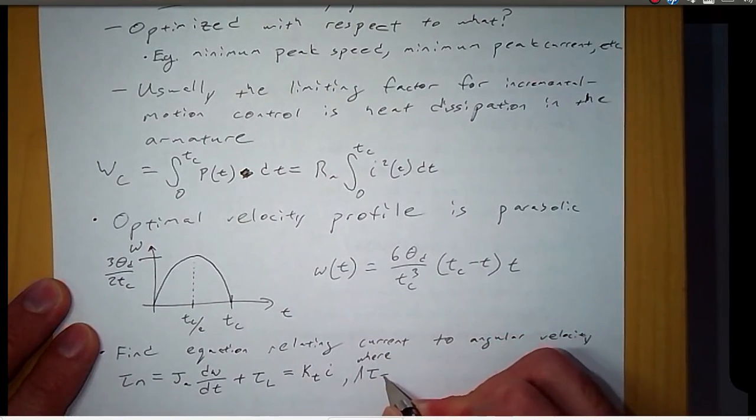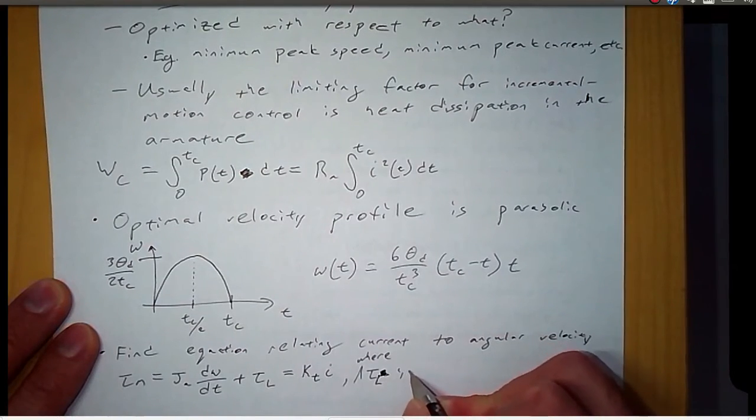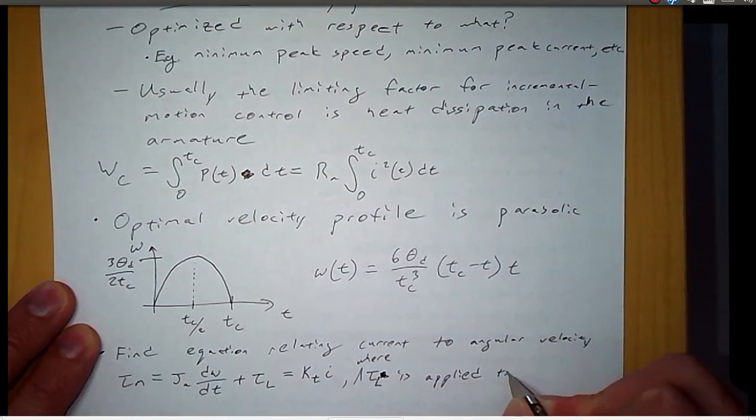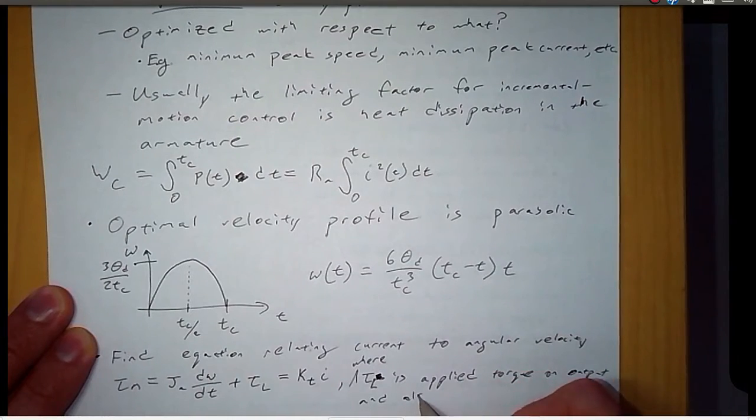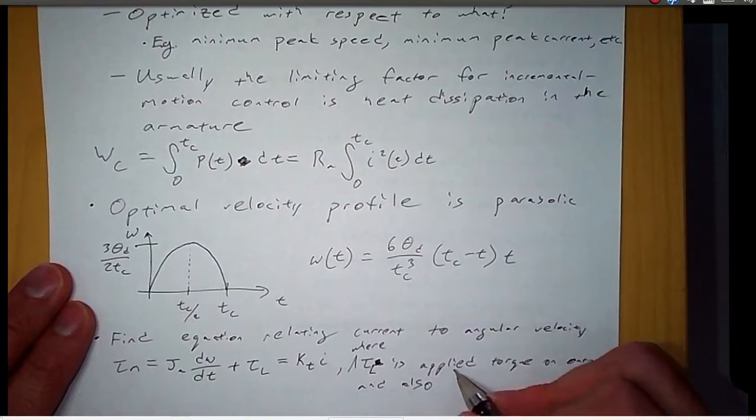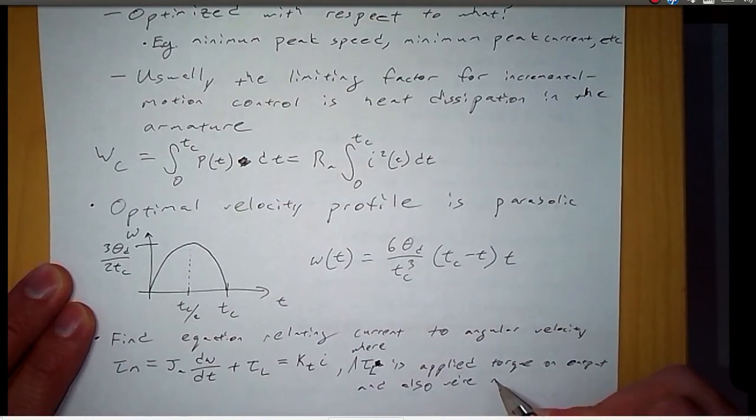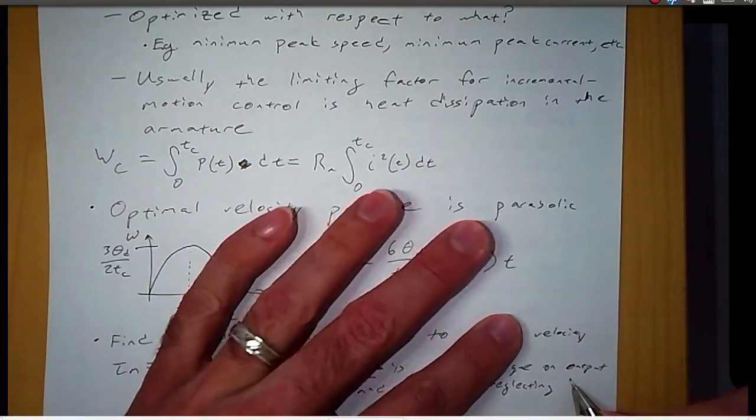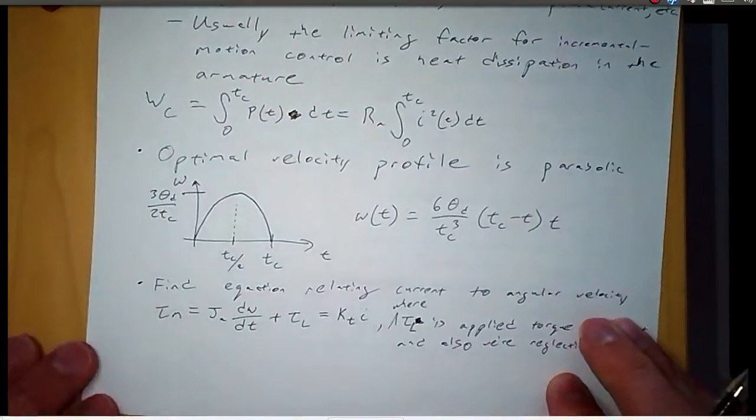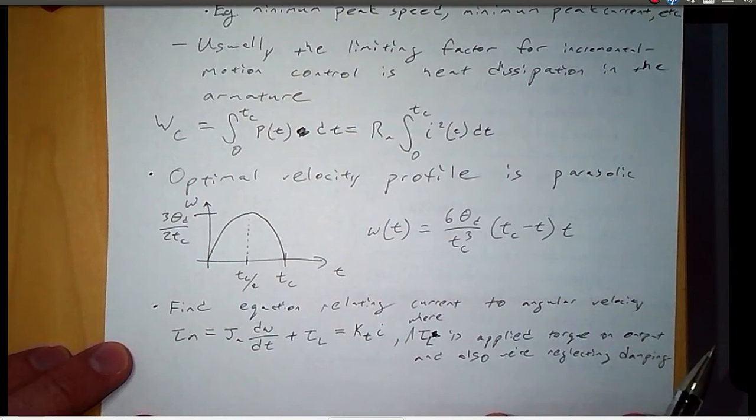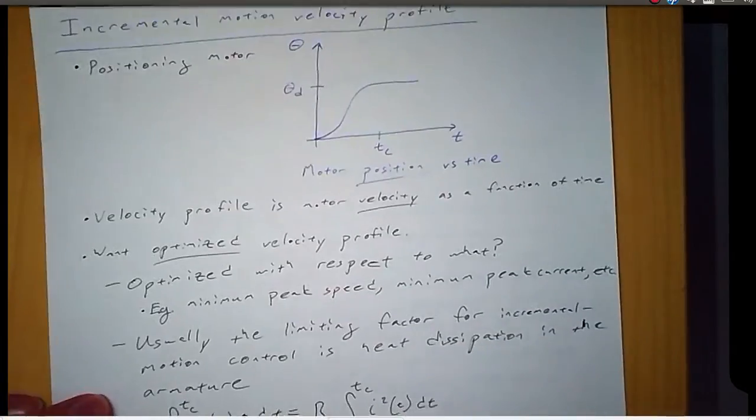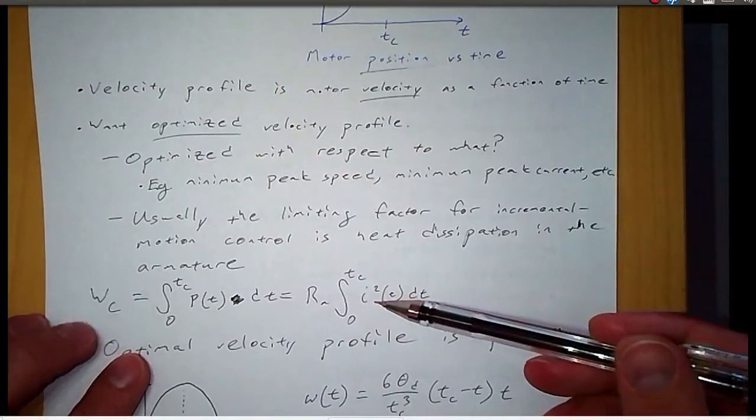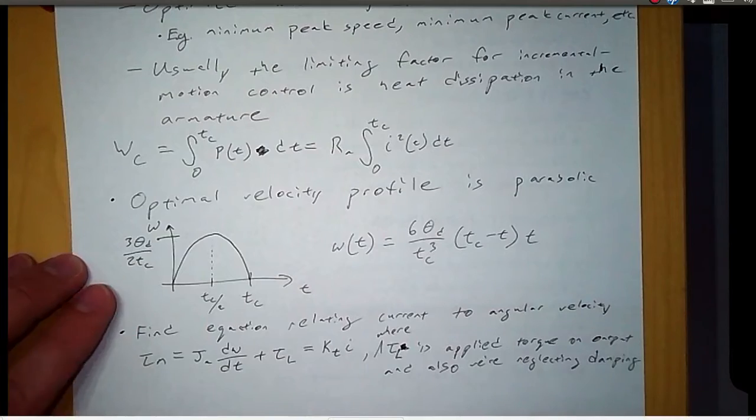So in this equation tau sub L is the applied torque on the output shaft. So load torque. And also what's different between this equation and what we saw before is we're neglecting the damping. So when we looked at the mechanical model before, we considered the viscous damping, but here we've omitted that term.